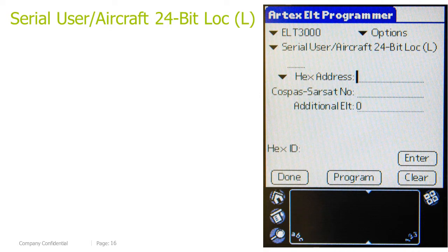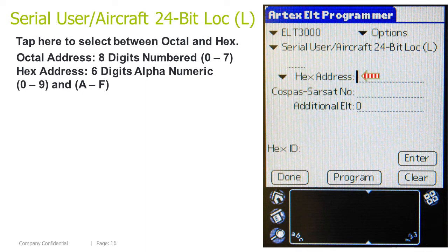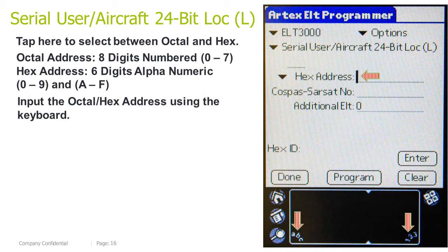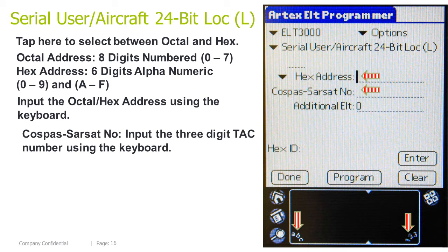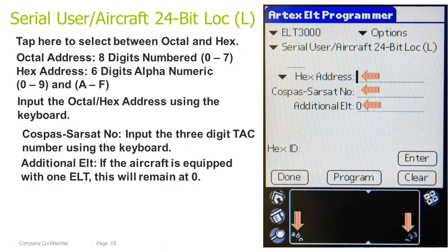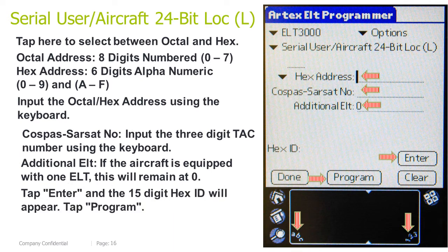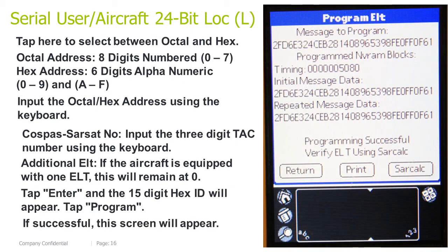Serial user aircraft 24-bit address location log: tap here to select between octal and hex address. Octal address is 8 digits, numbered 0 through 7; hex address is 6 digits, alphanumeric, 0 through 9 and A through F. Input the octal/hex address using the keyboard. COSPAS-SARSAT number: input the 3-digit TAC number using the keyboard. Additional ELT: if the aircraft is equipped with 1 ELT, this will remain at 0. Tap Enter and the 15-digit hex ID will appear. Tap Program. If successful, this screen will appear.